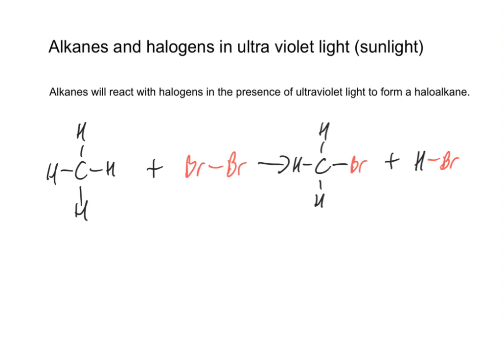So if I write, or continue writing the symbol equation at the bottom here, I've got CH4, which is methane, plus Br2, which then gives me CH3Br, because one of those hydrogens has been substituted for a bromine, plus HBr.